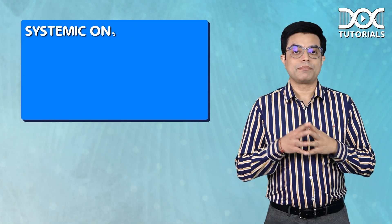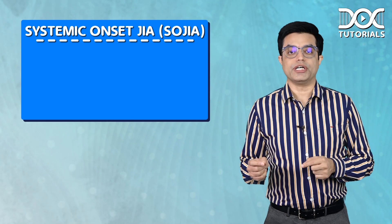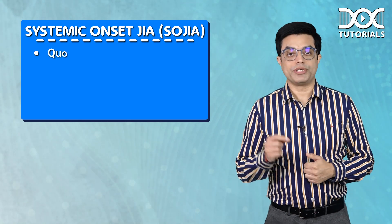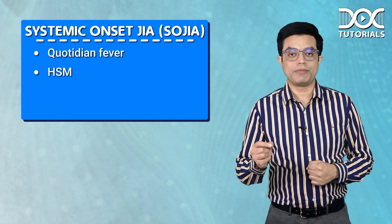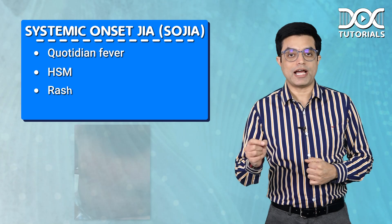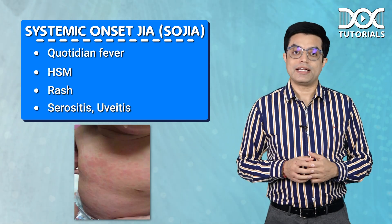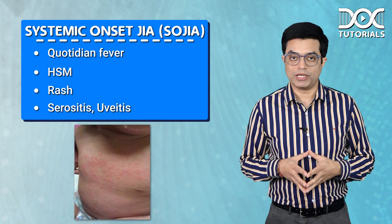Then we have systemic onset JIA, also called SOJIA. This is the form which will have quotidian fever. It can have hepatosplenomegaly, it can have rash, it can have serositis, and can have life-threatening complications as well.